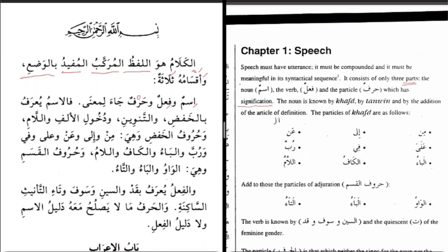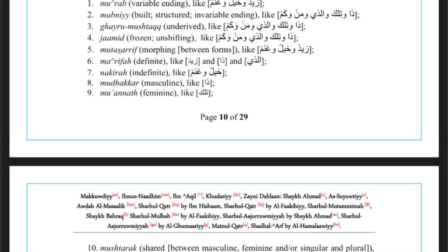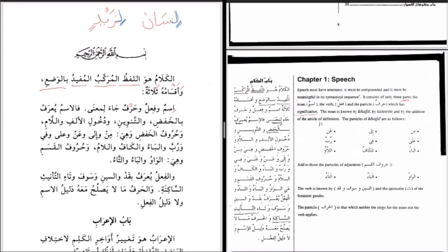Bismillah ar-Rahman ar-Rahim, alhamdulillah rabb al-alameen. Where did we reach in the text of Al-Ajurrumiyyah, where the author says 'ismun wa fi'lun wa harfun ja'a lima'ana' — a noun, a verb, and a meaningful particle. We broke that down, and then he said, which is where we are now: 'fal-ismu yu'arrafu' — the noun is known by such and such. He's going to give us the identifiers of an Arabic noun.